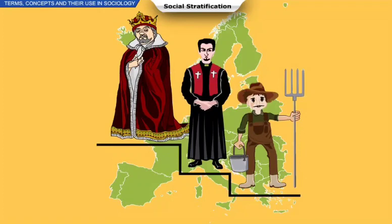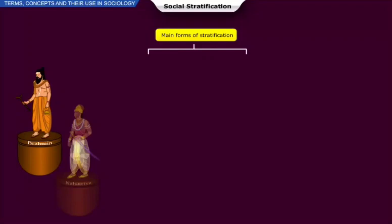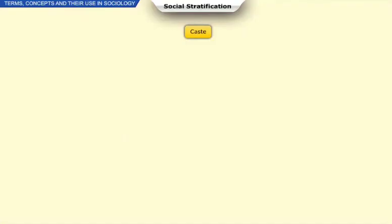The estate system divided people into hierarchical classes of nobility, clergy, and commoners. The main forms of stratification that exist in contemporary society are caste and class, which will be discussed here.